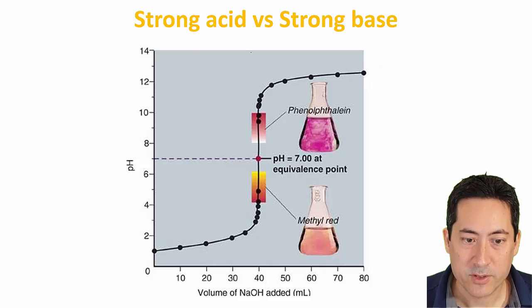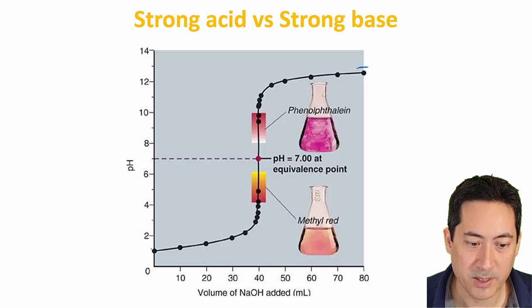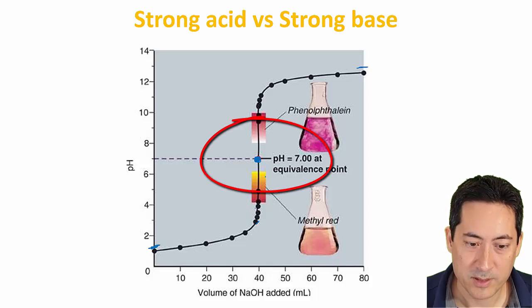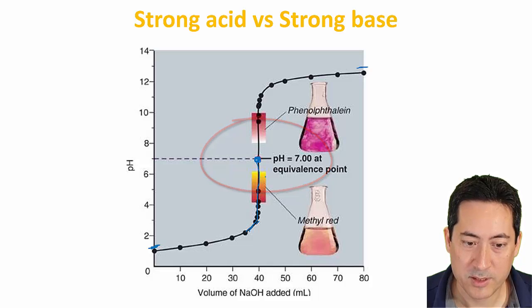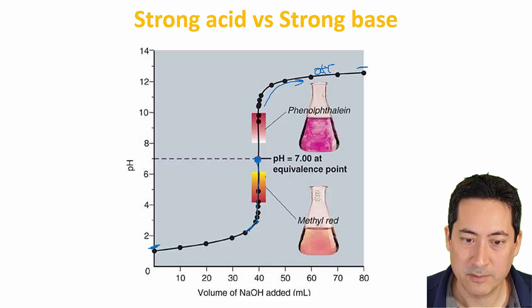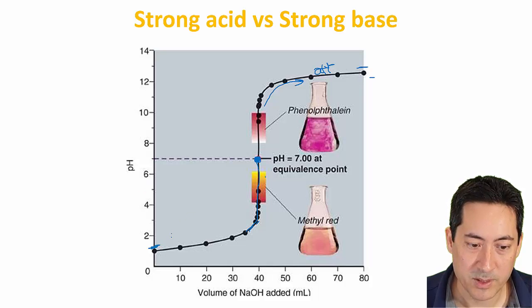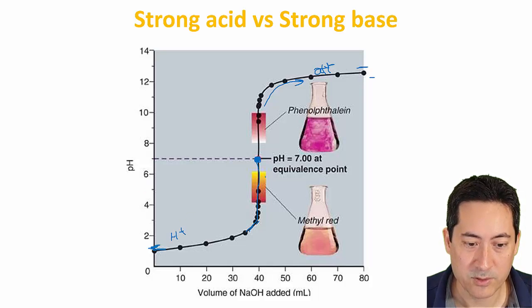This is a titration of a strong acid and a strong base. You can see it's almost up to 13 here, and this one starts at about 1. What you have here is all of a sudden when you get close to being neutralized, there's a massive jump, so there's equal amounts of acid and base here. Then you get to the excess OH minuses and reaches the pH of the strong base. You've started out with lots of H pluses down here, which is the pH of the strong acid.